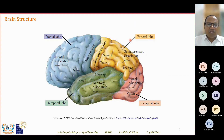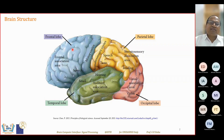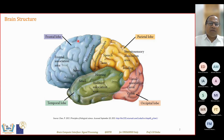We always begin any lecture on brain signal processing with this brain structure. These areas are very important — parietal lobe, occipital lobe, temporal lobe, and frontal lobe. If you see the positions of electrodes, which we'll discuss in detail in the next lecture, you will find that electrode nomenclatures are related to the names of these different areas. Each lobe has different functionalities, which we have already covered.